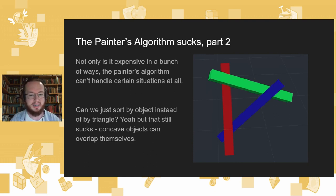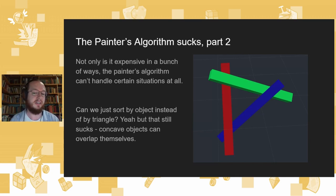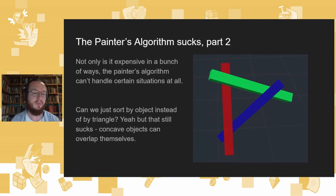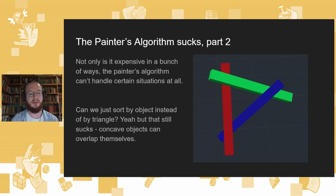But that's not where the crapness ends. There are certain situations the painter's algorithm pretty much can't handle at all. With this picture, it's not immediately obvious which of those objects you would draw first, second, and third. You can't answer the question of which one's closest to the camera and therefore which one should we render last. To truly solve all problems like this, you've got to sort per triangle instead of per object, and somehow detect situations like this and split the triangles up into smaller geometry and then sort them — which is really, really bad. And that's to say nothing of objects that intersect, where two things are on top of each other.